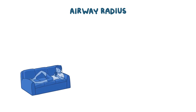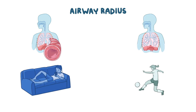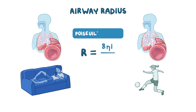Unlike air viscosity and airway length, airway radius can change from minute to minute. For example, when laying on the couch, you don't need much oxygen, so your bronchi are under parasympathetic control, causing bronchoconstriction. On the flip side, when playing soccer, the sympathetic nervous system causes bronchodilation, allowing more oxygen into your lungs. By combining the variables of length, air viscosity, and resistance, we arrive at Poiseuille's Law.